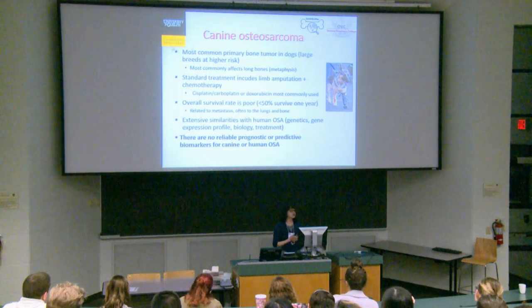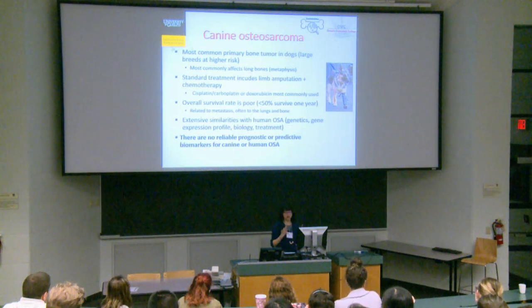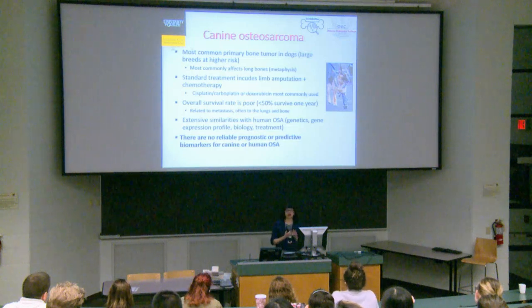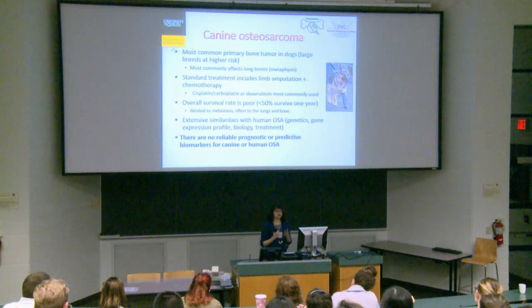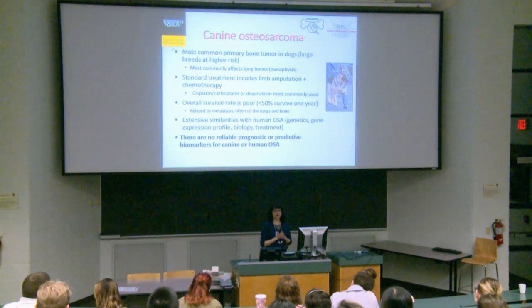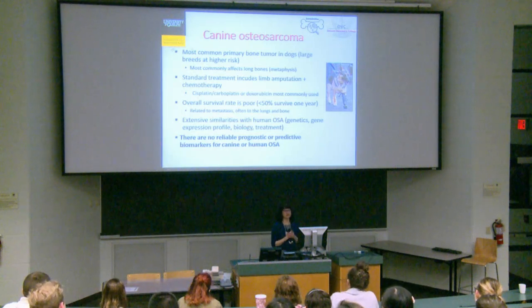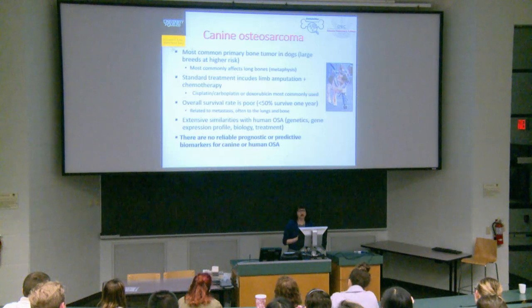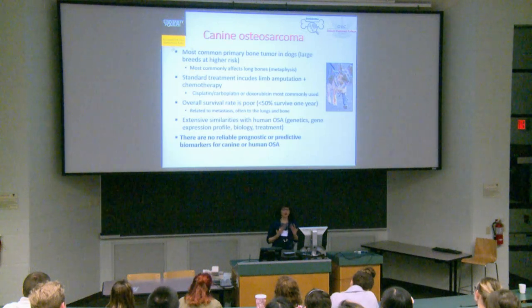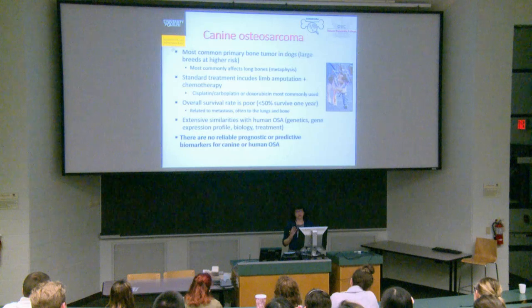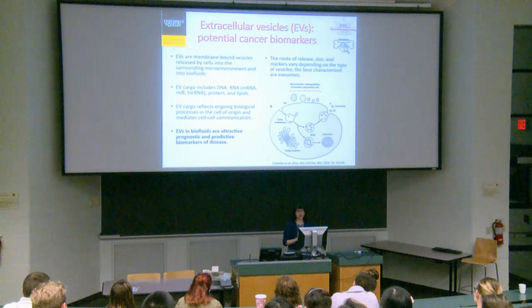Poor survival is mostly related to development of lung and bone metastasis. Importantly, there are extensive similarities between dog and human osteosarcoma in genetics, gene expression profile, biology, and treatments. Therefore it is an important translational model where both species can benefit. There are currently no reliable prognostic or predictive biomarkers for canine or human osteosarcoma — and this is where extracellular vesicles may be important.